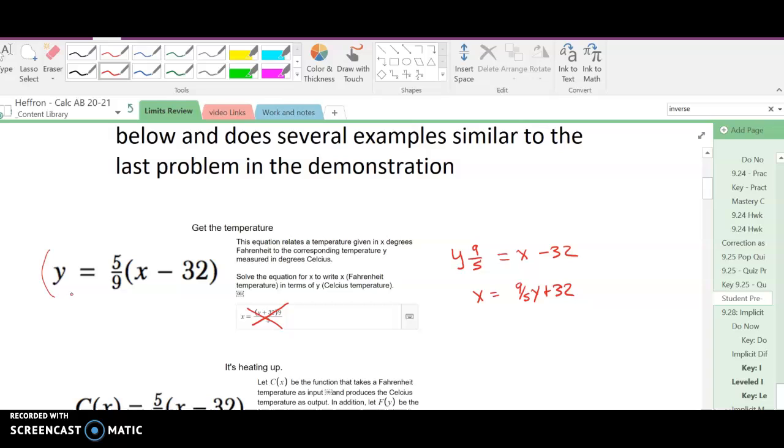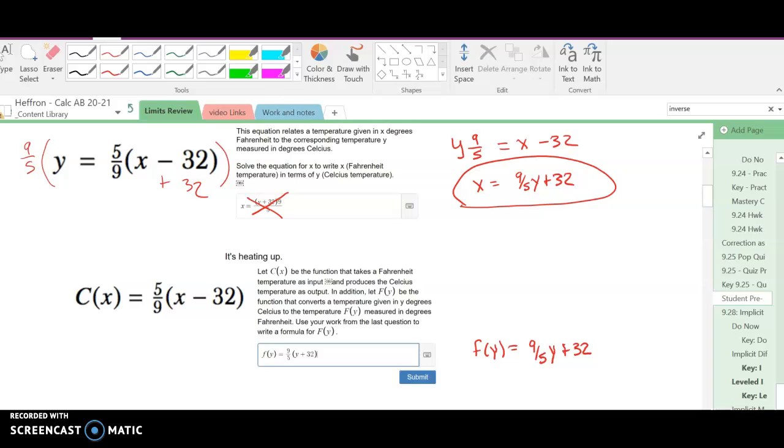So the answer to this first question is just multiplying everything by 9/5 and then adding 32 to both sides, and you get what you see here: x is equal to 9/5 y plus 32.